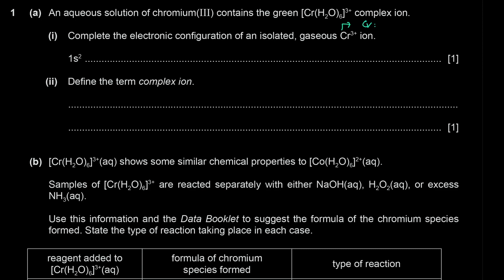Chromium is [Ar] 3d5 4s1 — the exception we learned about, because it has unpaired electrons at the orbital, so it's not 3d4 4s2, it's 3d5 4s1. Then Cr3+ has lost three of its outer electrons — the 4s electron first, then two of the 3d electrons — leaving us with 3d3. So the configuration is 1s2 2s2 2p6 3s2 3p6 3d3.